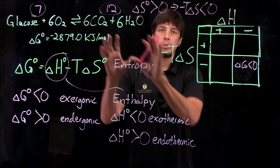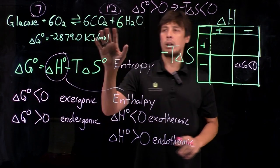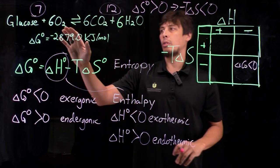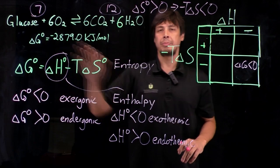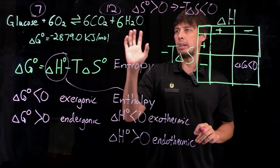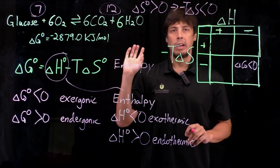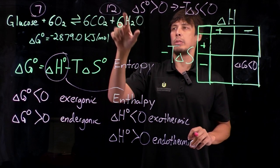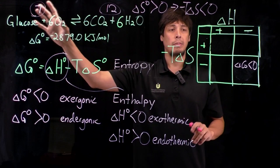Now if you think about this reaction in the reverse, where carbon dioxide and water react to form oxygen and glucose, you reverse the signs of everything. In this case, this would be an endothermic reaction and entropically disfavored, because you're going from 12 molecules to 7 molecules.